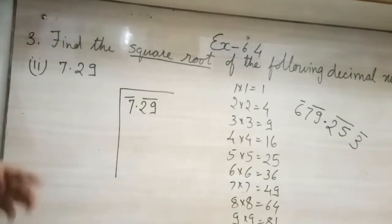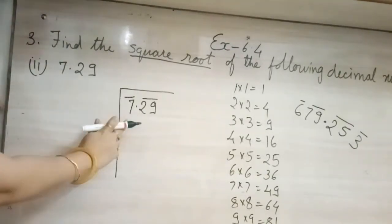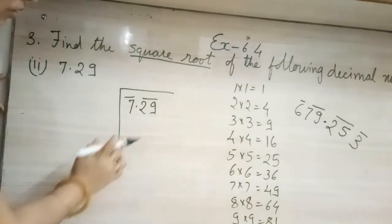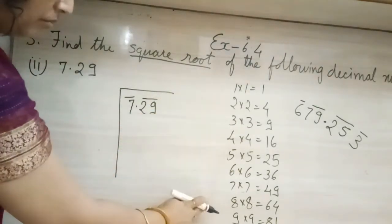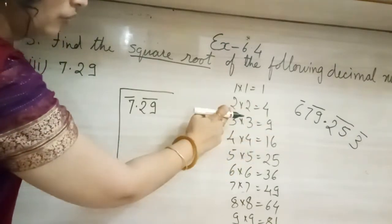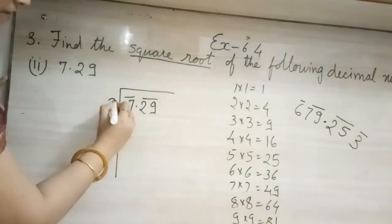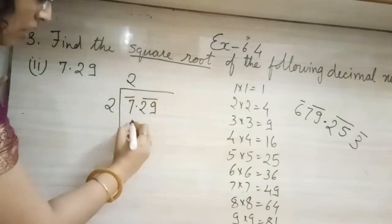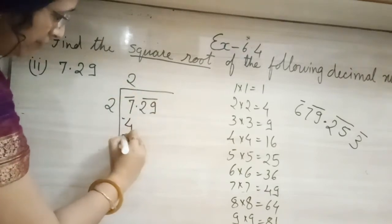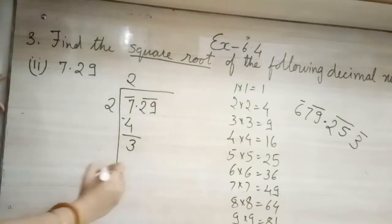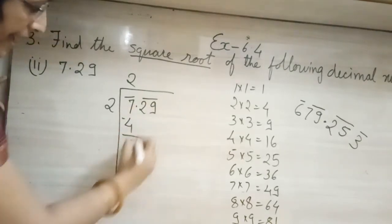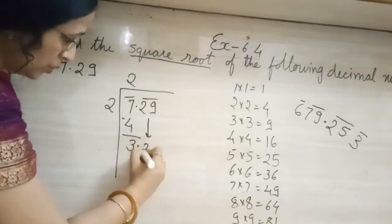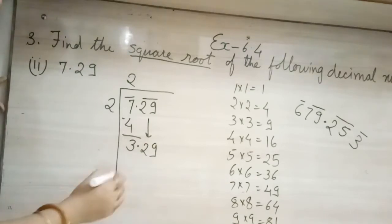So now, here 7 has a bar. Then what are we going to do? We will see the perfect square number. So 3, 3 times 3 is 9, that's too big. So you will go for 2. So I will write here 2, I will write here 2, and here will come 4. Then we will subtract. So what will be left? 3. Decimal point, as it is. Downside, what will come? 3.29.